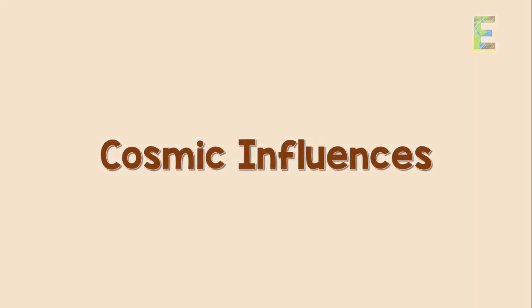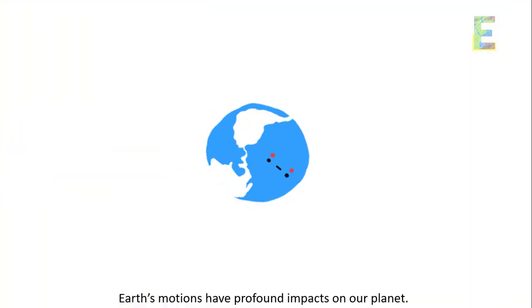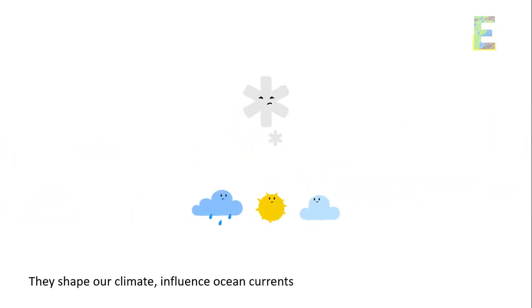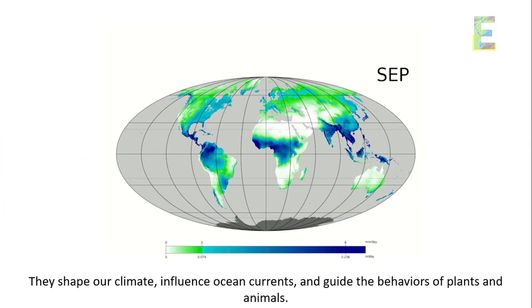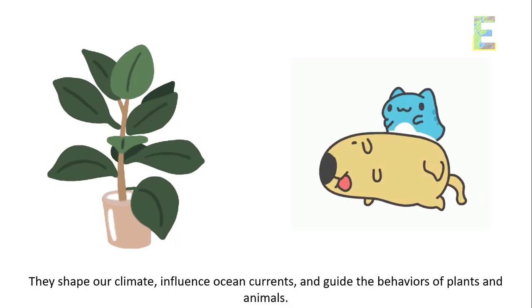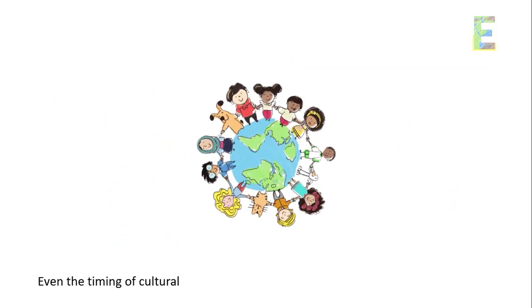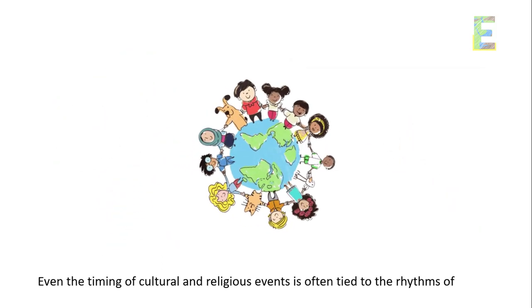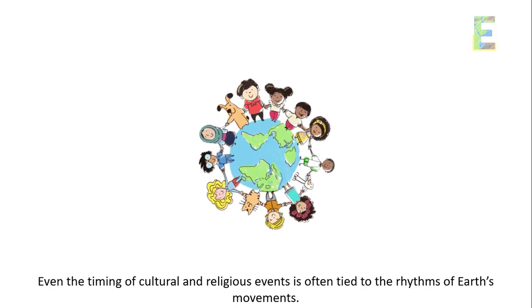Cosmic influences. Earth's motions have profound impacts on our planet. They shape our climate, influence ocean currents, and guide the behaviors of plants and animals. Even the timing of cultural and religious events is often tied to the rhythms of Earth's movements.